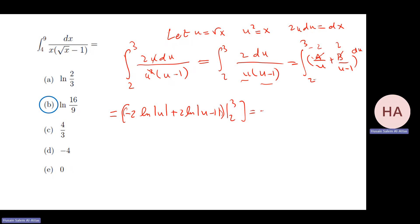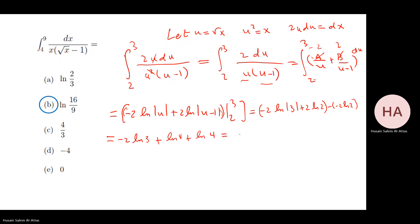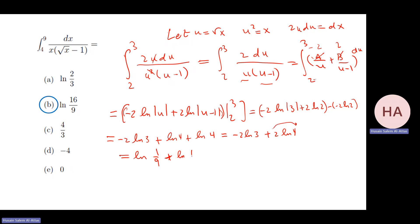Evaluating from 2 to 3: we get minus 2 ln 3 plus 2 ln 2 minus (minus 2 ln 2 plus 2 ln 1). Since ln 1 = 0, we have minus 2 ln 3 plus ln 4 plus ln 4, which equals minus 2 ln 3 plus 2 ln 4. Taking these as powers: ln(1/9) plus ln(16), giving the final answer ln(16/9).